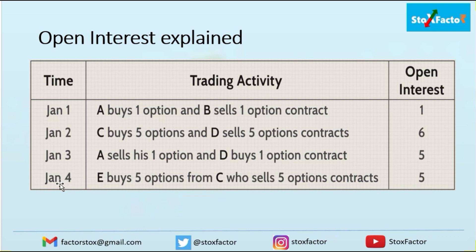On January 4, E buys five options from C, who had bought those five options on January 2. So C closes its positions and E opens his position — it has just transferred from one person to another. The open interest remains the same at five. In this way, open interest is calculated at the exchange.